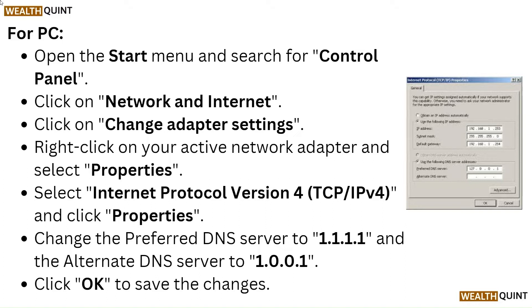For PC, open the start menu and search for Control Panel. Click on Network and Internet, then click on Change Adapter Settings. Right-click on your active network adapter and select Properties. Select Internet Protocol Version 4 and click Properties. Change the preferred DNS server to 1.1.1.1 and the alternate DNS server to 1.0.0.1. Click OK to save the changes.